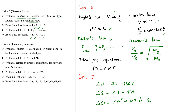Graham's law: Ra/Rb = √(Mb/Ma), where R is the rate of diffusion and M is molar mass. The ideal gas equation is PV = nRT. These formulas should be studied well — knowing the formula is enough for 1-mark and 2-mark questions, and it becomes the basis for 3-mark answers.